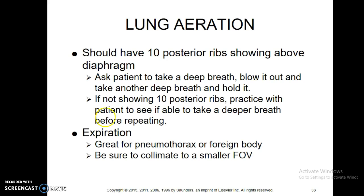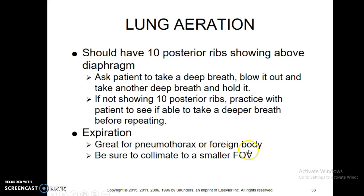Ten posterior ribs showing is ideal. We'll settle for 8 to 10 on most patients because if a patient has some breathing problems you're probably not going to get 10 posterior ribs. The best way to achieve that is to take two breaths in. If you do get an expiration on accident, you should still send it — if there's a pneumothorax it will show up better on expiration, or a foreign body will move a little more on expiration compared to inspiration.